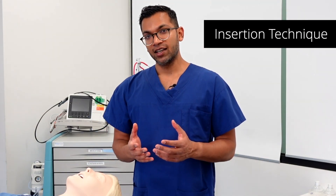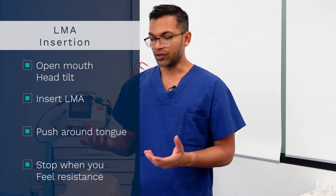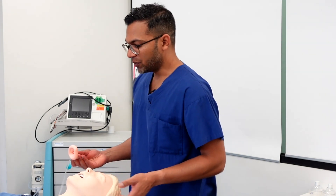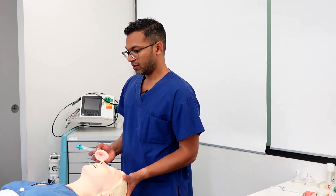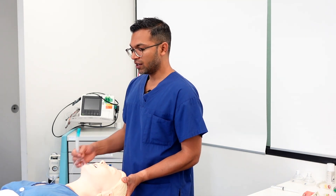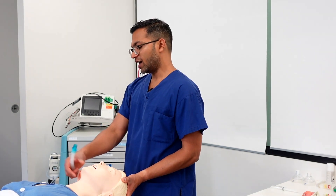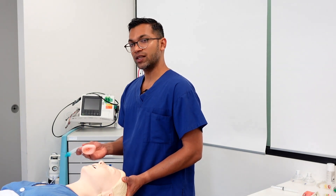Next we're going to go through insertion technique. There are a couple of different ways to insert the LMA, but the most common is to push it past the tongue straight back. I usually open the head with a head tilt — that opens the mouth. Often you can get your assistant to open the mouth, and that allows you to place it in. The minimal aperture you need is about two centimeters.